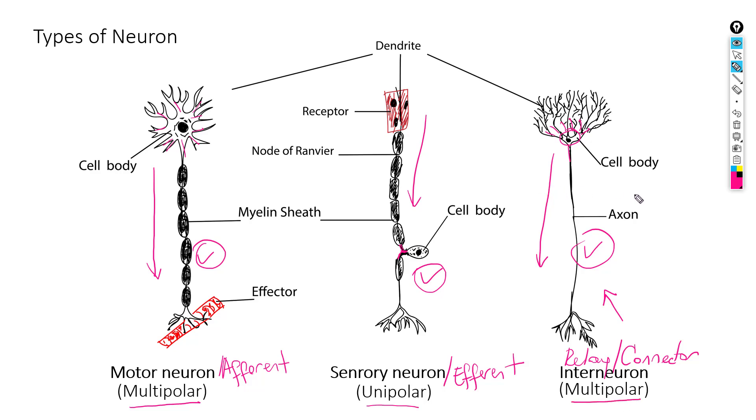There are some other differences here. Like interneuron does not have myelin sheath. So, this is gonna be non-myelinated axon. And keep in mind that myelinated axons will transmit impulses faster than the non-myelinated axons.